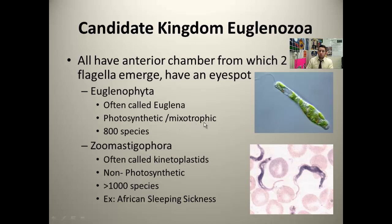Some are mixotrophic, which means they can be both autotrophic and heterotrophic. Of course, not only are there the euglenoid phyta within this proposed candidate kingdom, but there's also the zoomastogophora. Sometimes they're called the kinetoplasts because they have a structure called a kinetoplast — a little granule. If you see at the base of the flagellum, there's a mitochondria, and within that mitochondria there's a small organ that contains DNA called a kinetoplast.